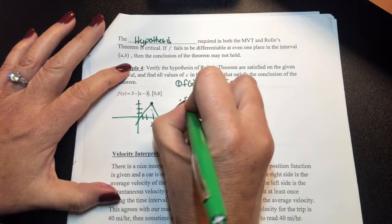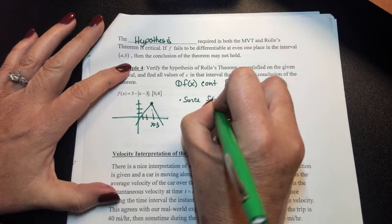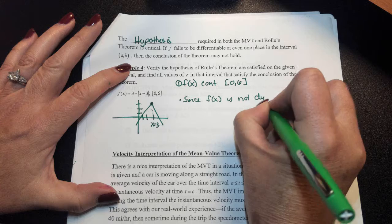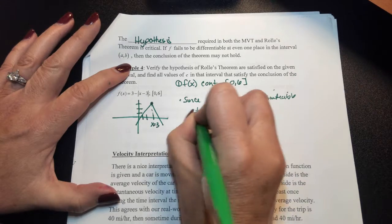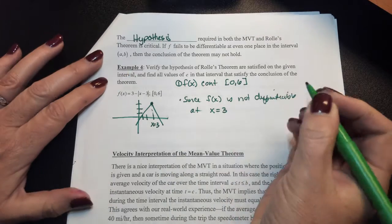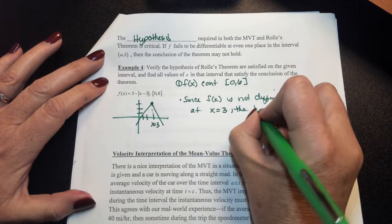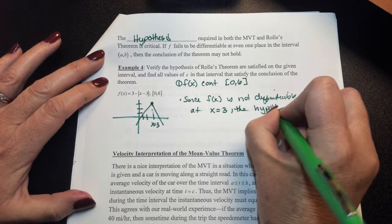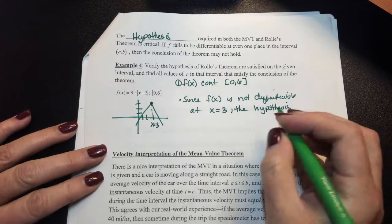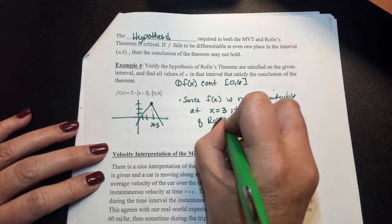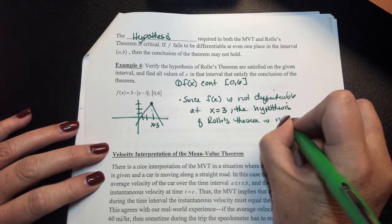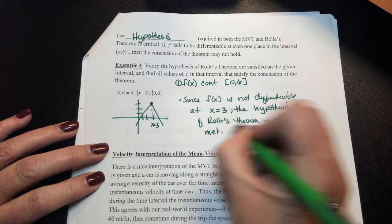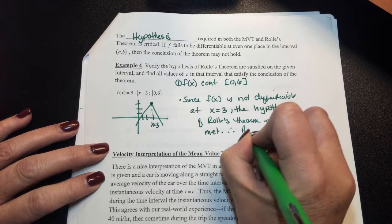Since f of x is not differentiable at x equals 3, the hypothesis of Rolle's theorem is not satisfied or not met. Therefore, Rolle's theorem cannot be applied.